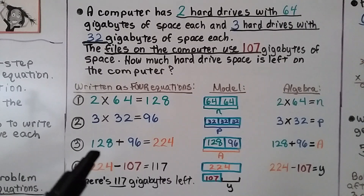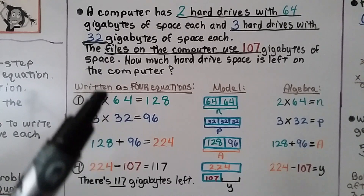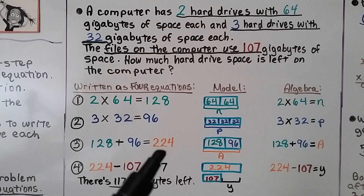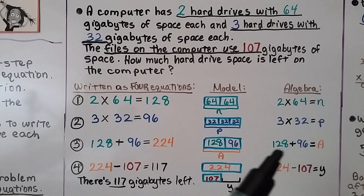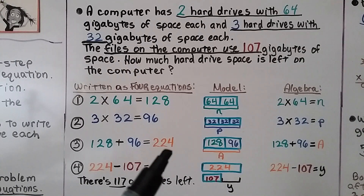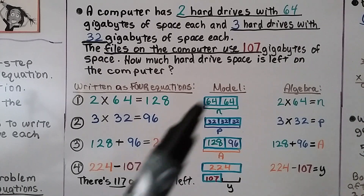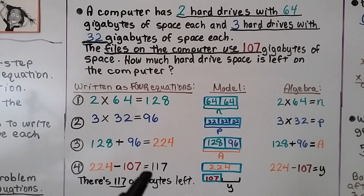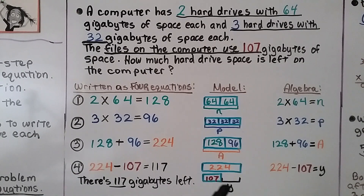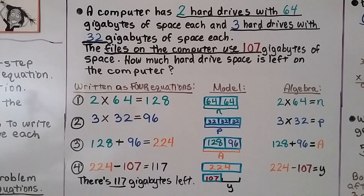The third equation adds 128 plus 96 to find the total gigabytes on the entire computer. We model it with a bar showing 128 and 96, and write 128 plus 96 equals a, which is 224. The fourth equation is 224 minus 107 — the gigabytes used by files — leaving 117 gigabytes. In algebra: 224 minus 107 equals y. We know there are 117 gigabytes of space left.